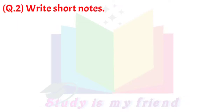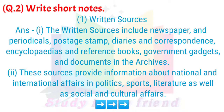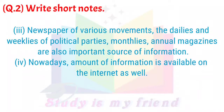Question 2: Write short notes. 1. Written Sources. Answer: Written sources include newspapers and periodicals, postage stamps, diaries and correspondences, encyclopedias and reference books, government gazettes and documents in the archives. These sources provide information about national and international affairs in politics, sports, literature, as well as social and cultural affairs. Newspapers of various movements, dailies and weeklies of political parties, monthlies and annual magazines are also important sources of information. Nowadays, a large amount of information is available on the internet.